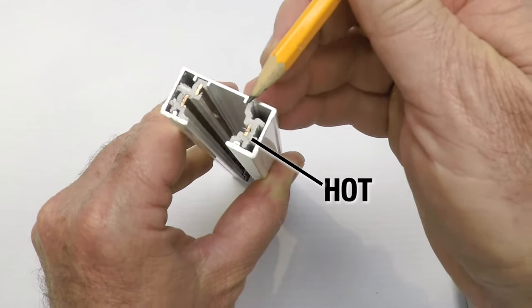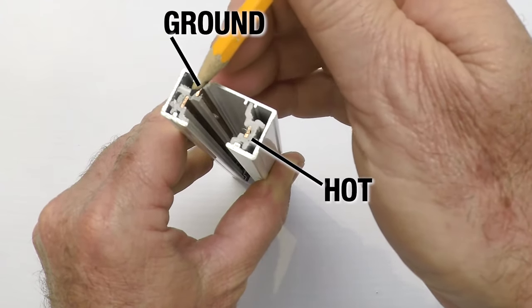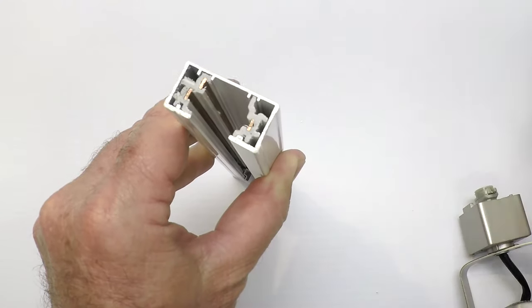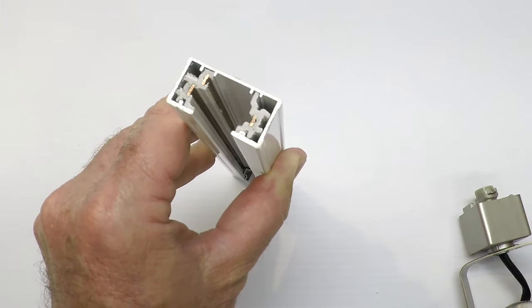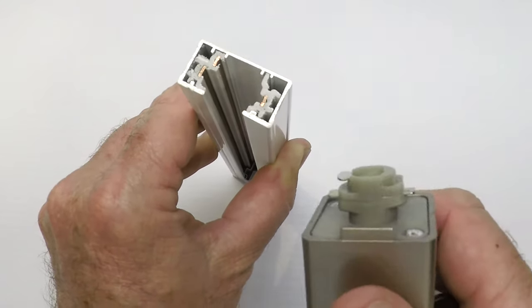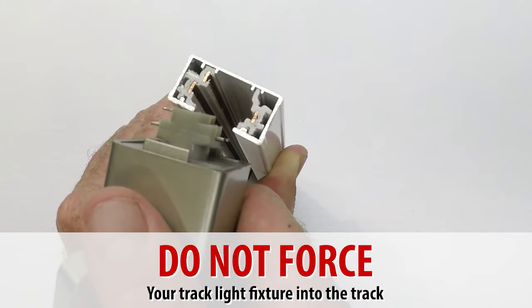See the copper bus bars here? On this side is the hot, down below on the other side is the ground, and above it is neutral. So your light fixture has to make contact with all three of those. Here's a light fixture right here.